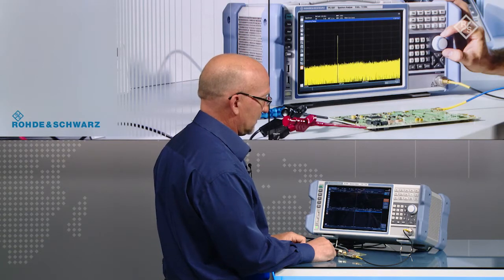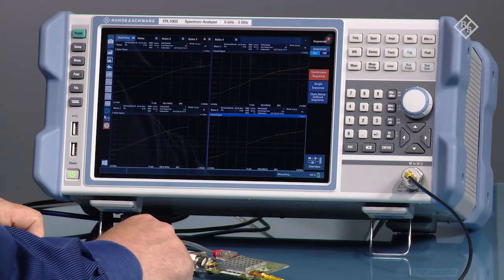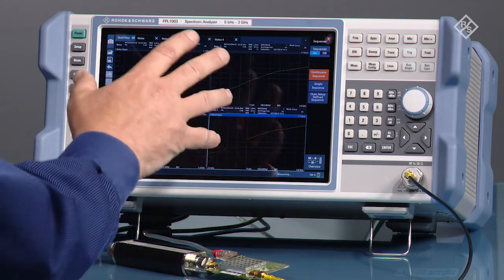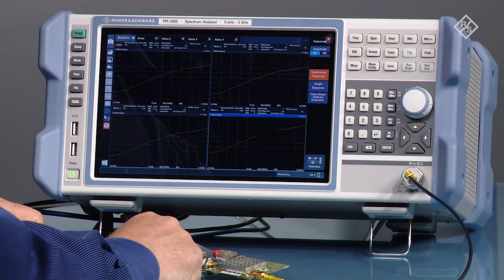This would be especially useful for someone that wants to measure noise figure in different frequency bands, and maybe look at one and then switch to this mode where they can look at all four bands at the same time.